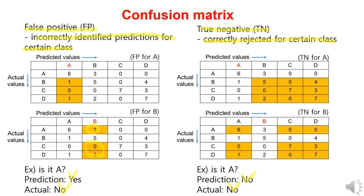Similarly, for class B, true negative can be represented in color. Likewise, it would be good for you to think about true negatives for classes C and D using the same approach.